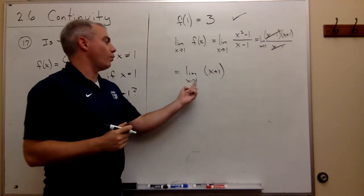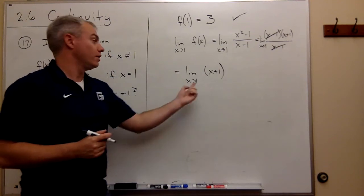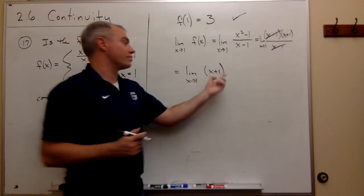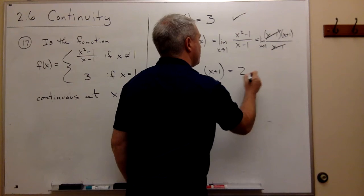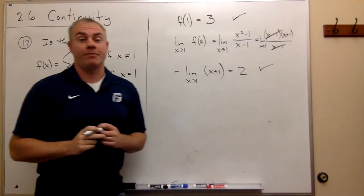Now, I can plug in the 1 without creating any division by 0. I plug it in. I get 1 plus 1, which is 2. And sure enough, I have a limit value.